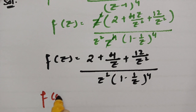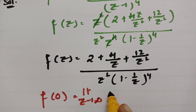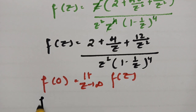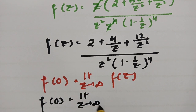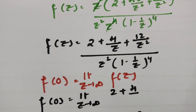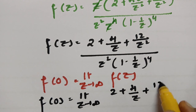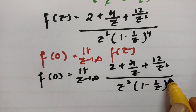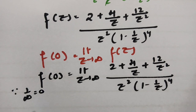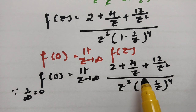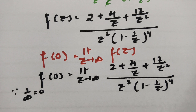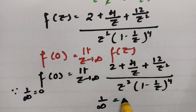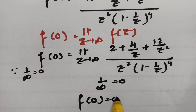For f(0), substituting F(z) into the formula: limit z→∞ of (2 + 4/z + 12/z²) / [z² · (1 − 1/z)⁴]. Since 1/∞ = 0, all terms with 1/z or 1/z² vanish. Therefore f(0) = 0.